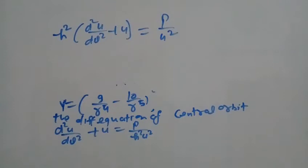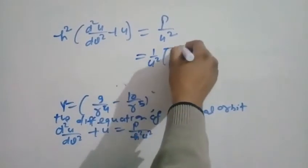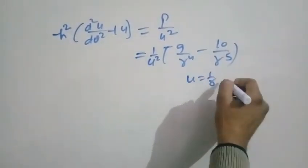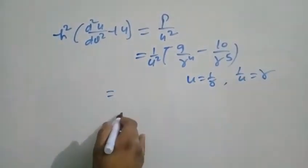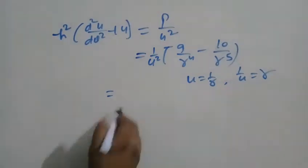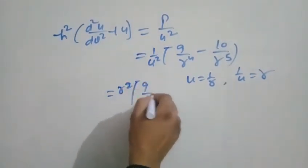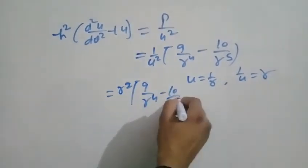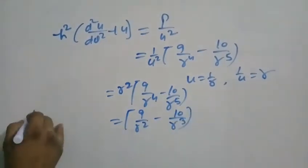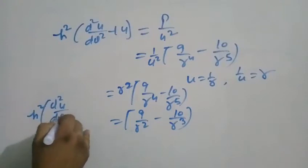We substitute P equal to 9/r⁴ minus 10/r⁵, and with u equal to 1/r, this becomes: 9u⁴ minus 10u⁵. So h² (d²u/dθ²) plus u equals 9u² minus 10u³ upon h².